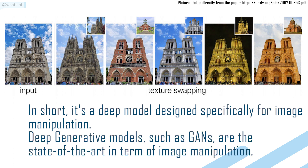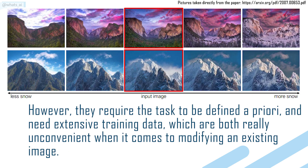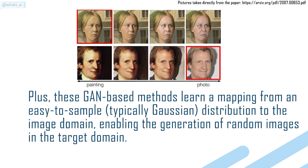Deep generative models such as GANs are the state of the art in terms of image manipulation. However, they require the task to be defined a priori and need extensive training data, which are both inconvenient when it comes to modifying an existing image. Plus, these GAN-based methods learn a mapping from an easy-to-sample, typically Gaussian, distribution to the image domain, enabling the generation of random images in the target domain.